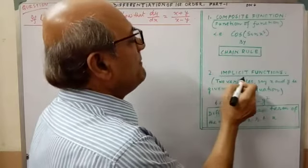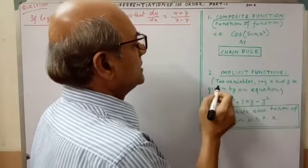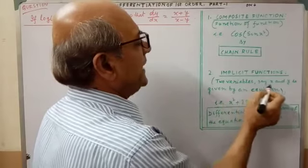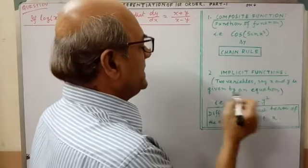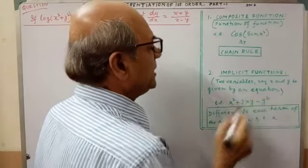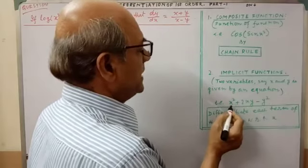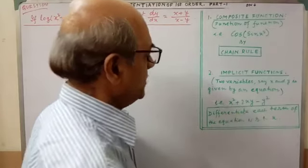Next, implicit function. Two variables, say x and y, is given by an equation that is x square plus 2xy minus y square.